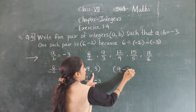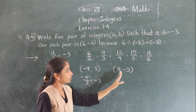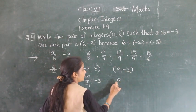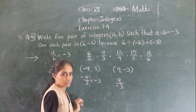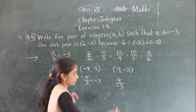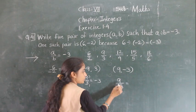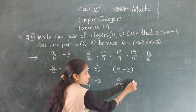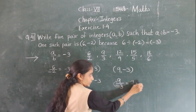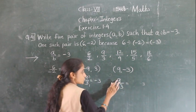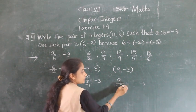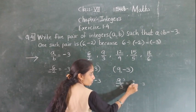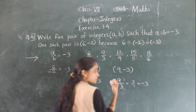We can also use 9 and minus 3. So 9 divided by minus 3 also equals minus 3. You can shift the minus sign — either minus 9 upon 3, or 9 upon minus 3. Similarly, 3 upon minus 1 gives minus 3.